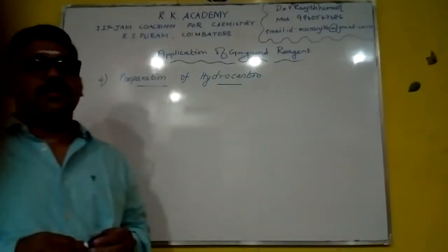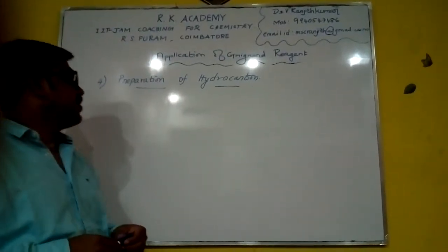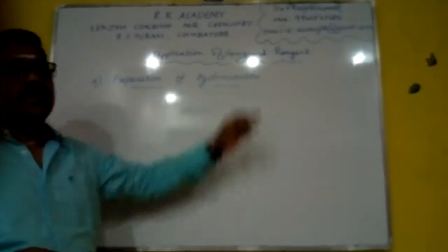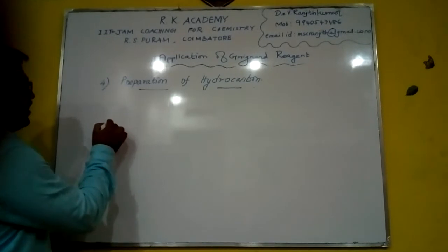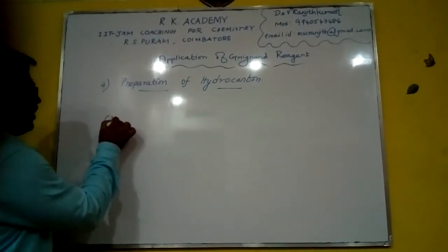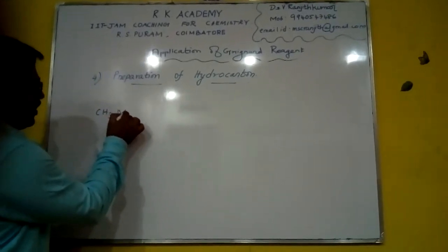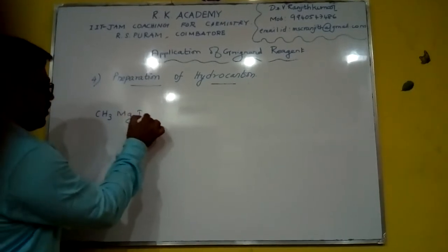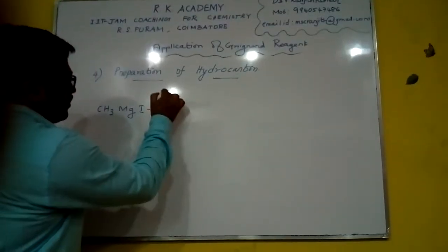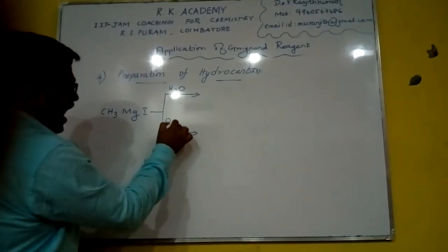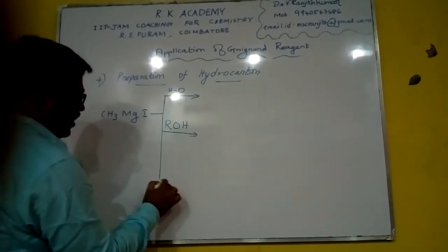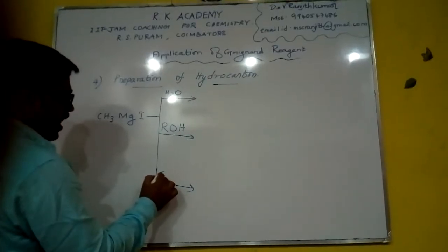Students, now we are going to see the preparation of Grignard reagent. Consider CH3MgI which is treated with water in the first case, with alcohol in the second one, and with alkyne in the third case.